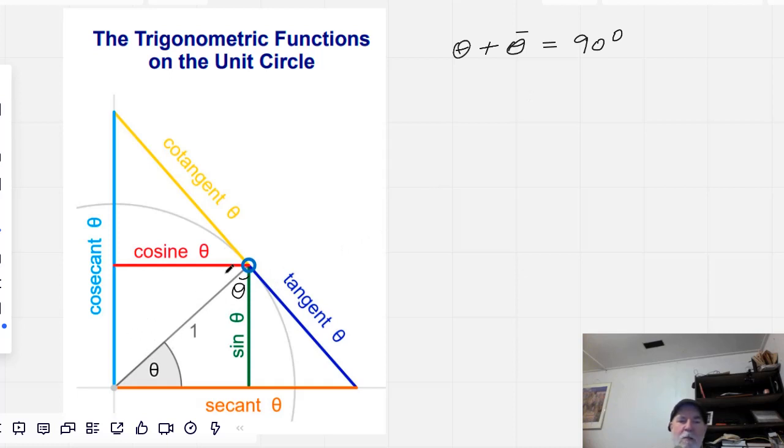So if this is theta bar, then this angle here is going to be theta. This is going to be theta bar and so forth. And we'll just fill her in here. That's a right angle. This is theta bar and that's theta.